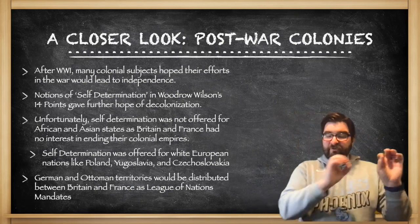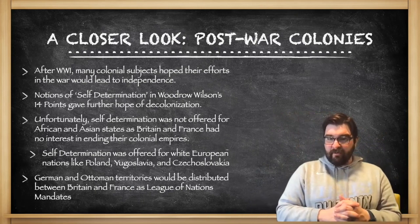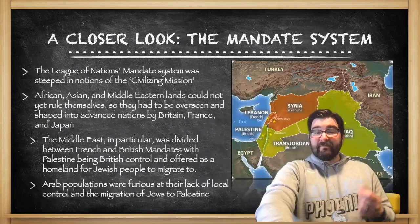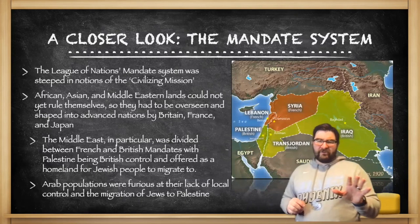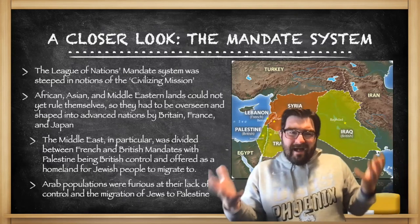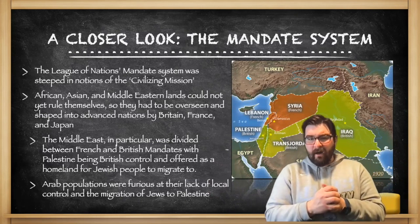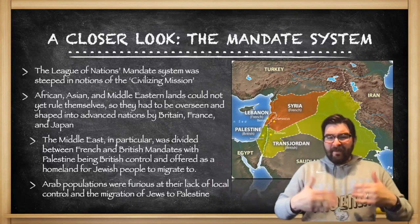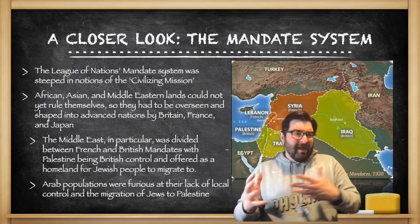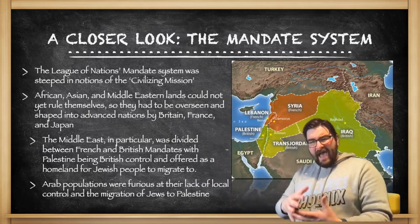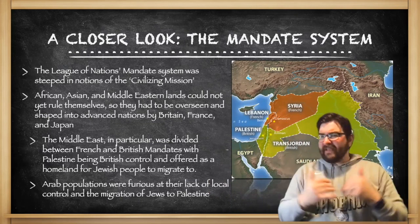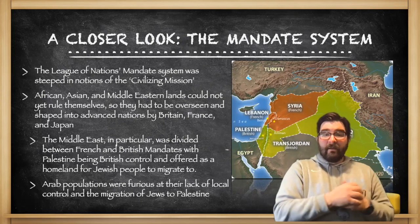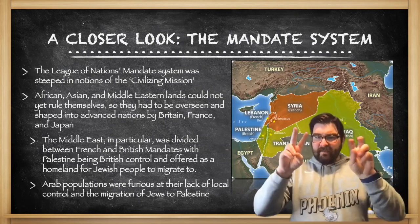After World War I, German and Ottoman territories were distributed between Britain and France as League of Nations mandates. While not technically called colonies, that's what they were in practice. The League of Nations granted these mandates based on the notion of a civilizing mission — basically that Middle Eastern, African, and some Asian states weren't ready to be independent nations and needed to be controlled and taught by already industrialized nations. The Middle East was divided between British and French mandates, with the region of Palestine under British control.